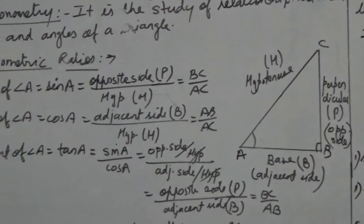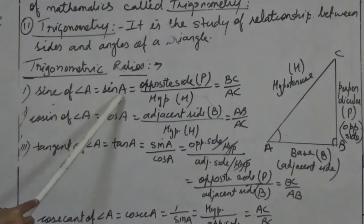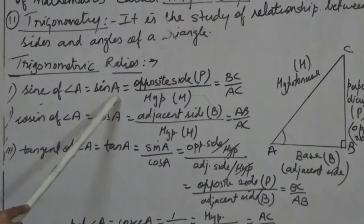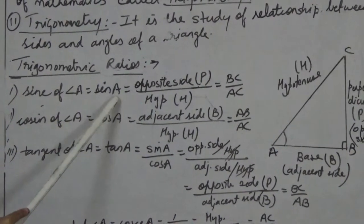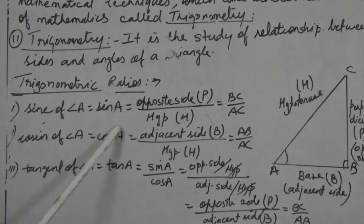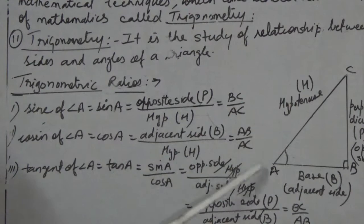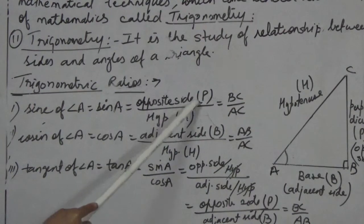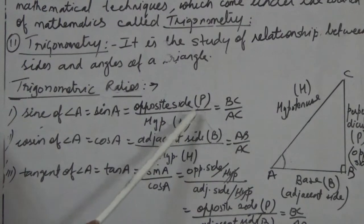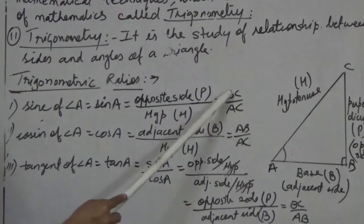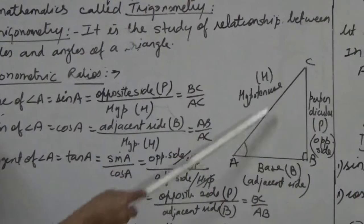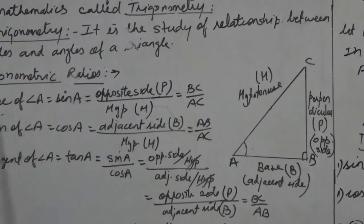The first trigonometric ratio is sin of angle A, which is sin A. We are taking acute angle A. Sin A equals to opposite side upon hypotenuse — that is perpendicular upon hypotenuse — which is BC by AC.